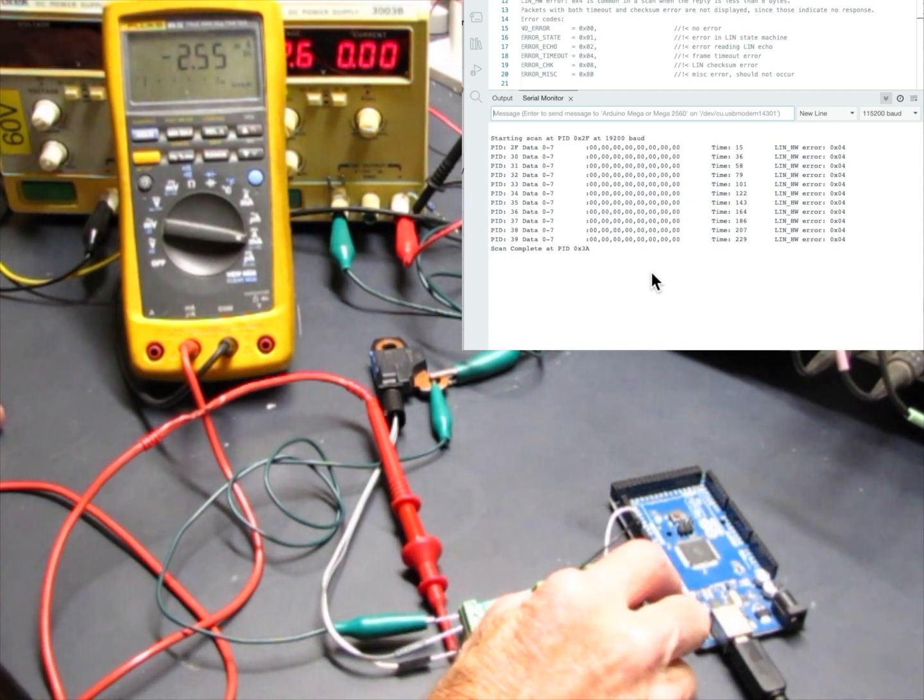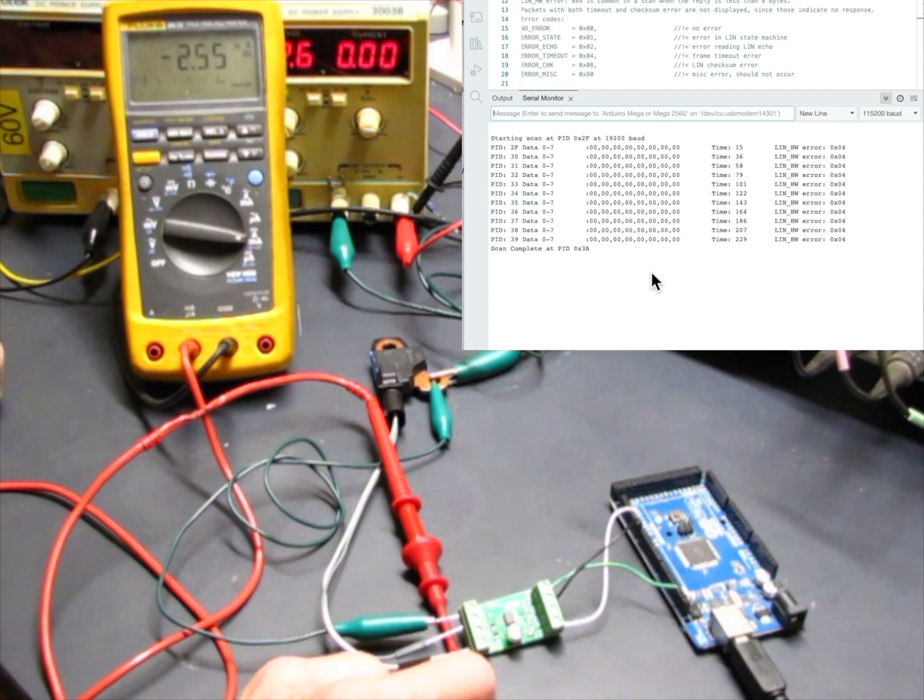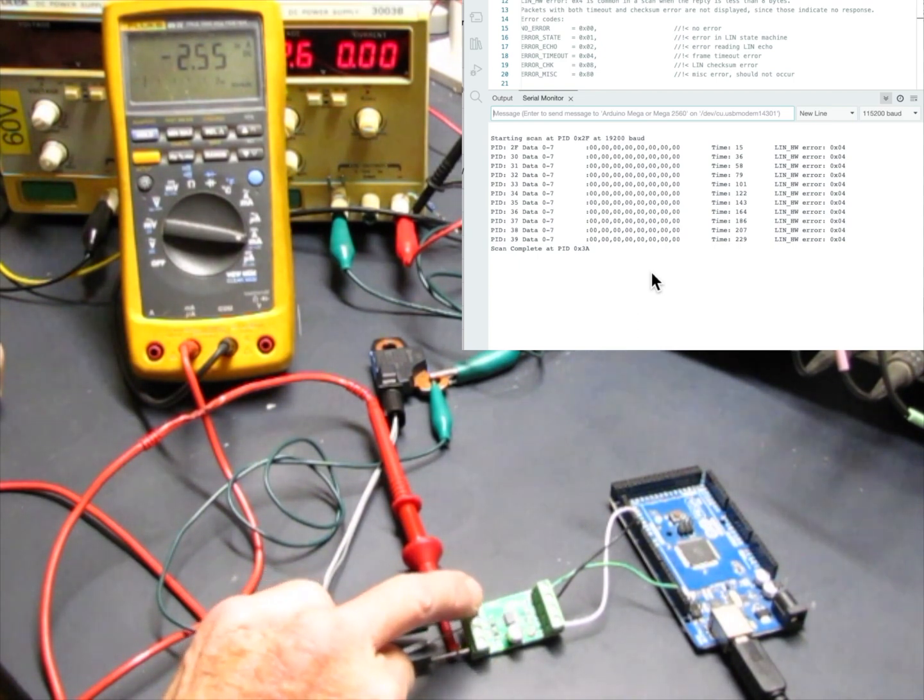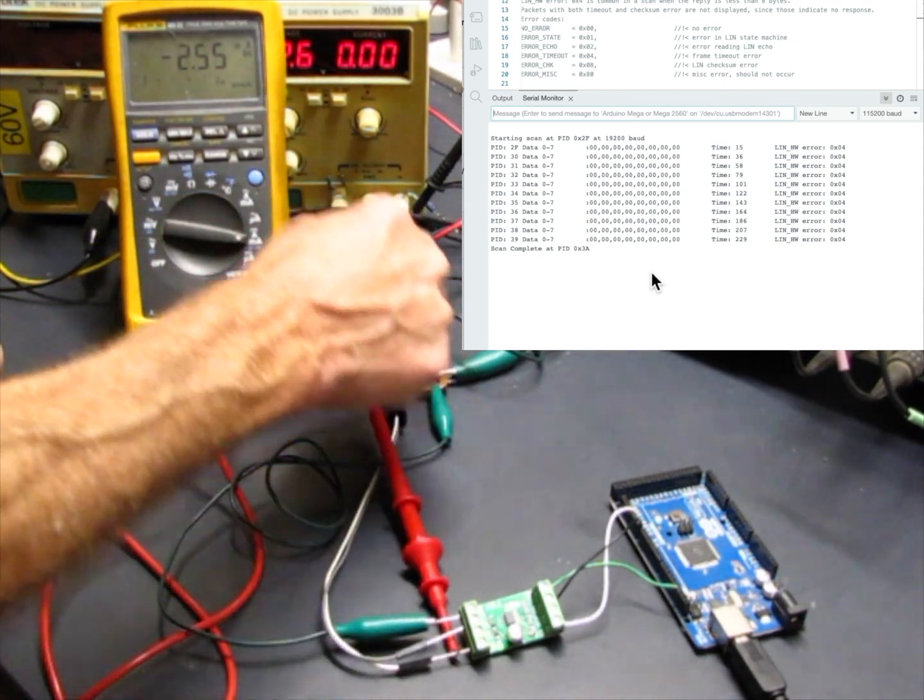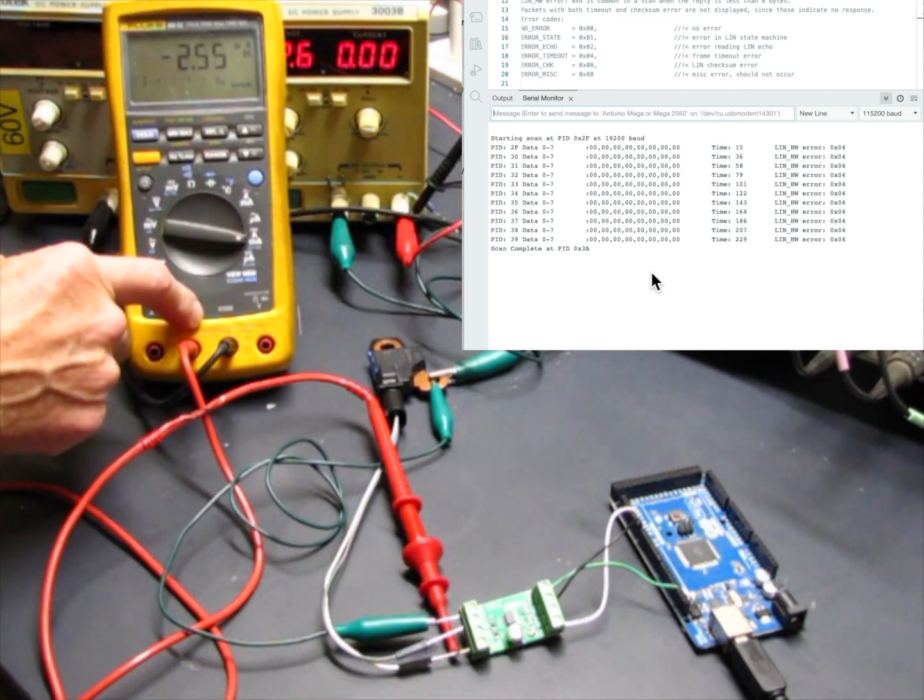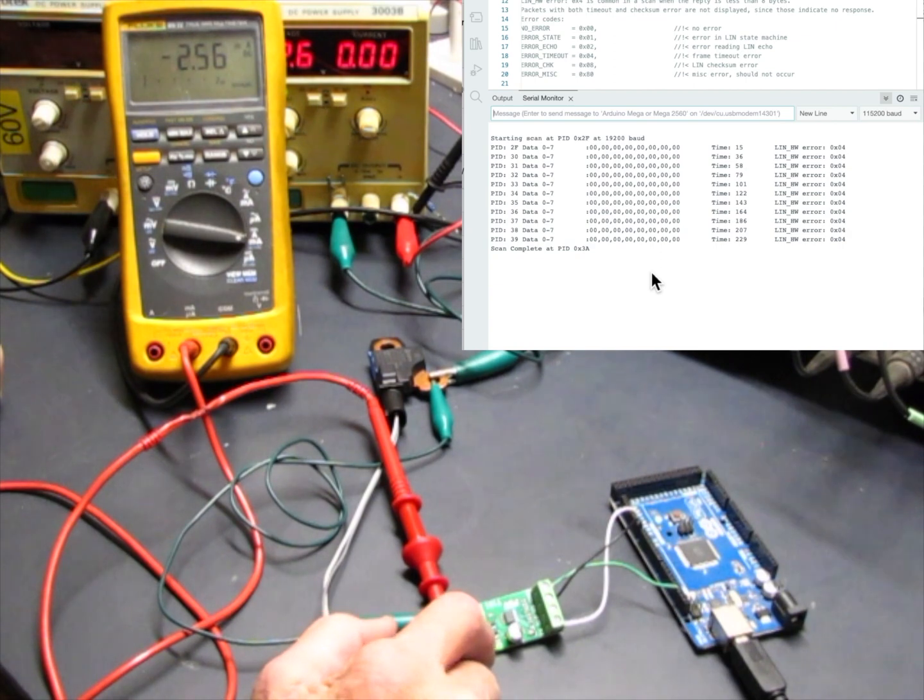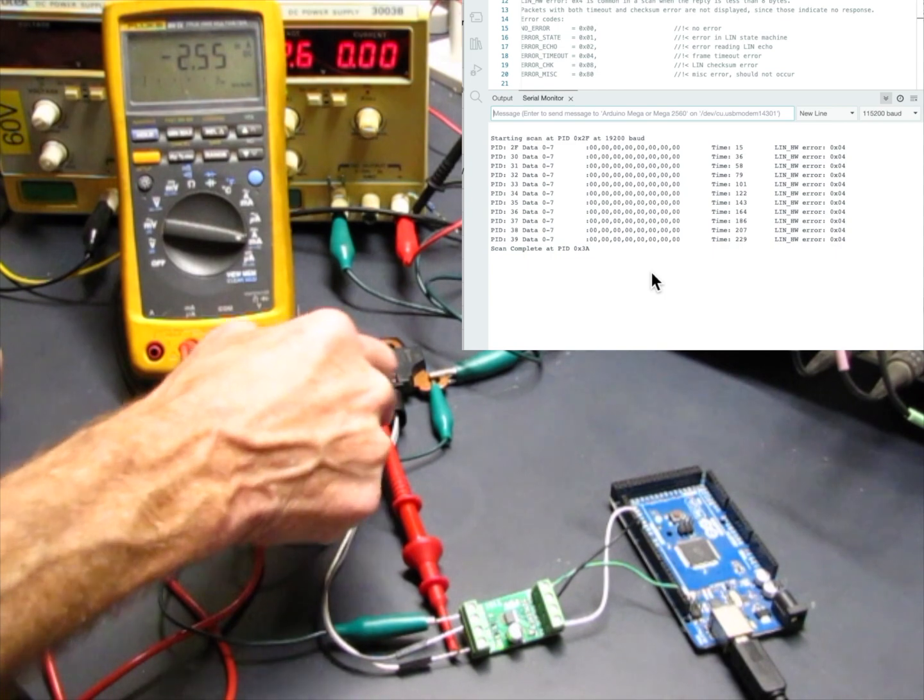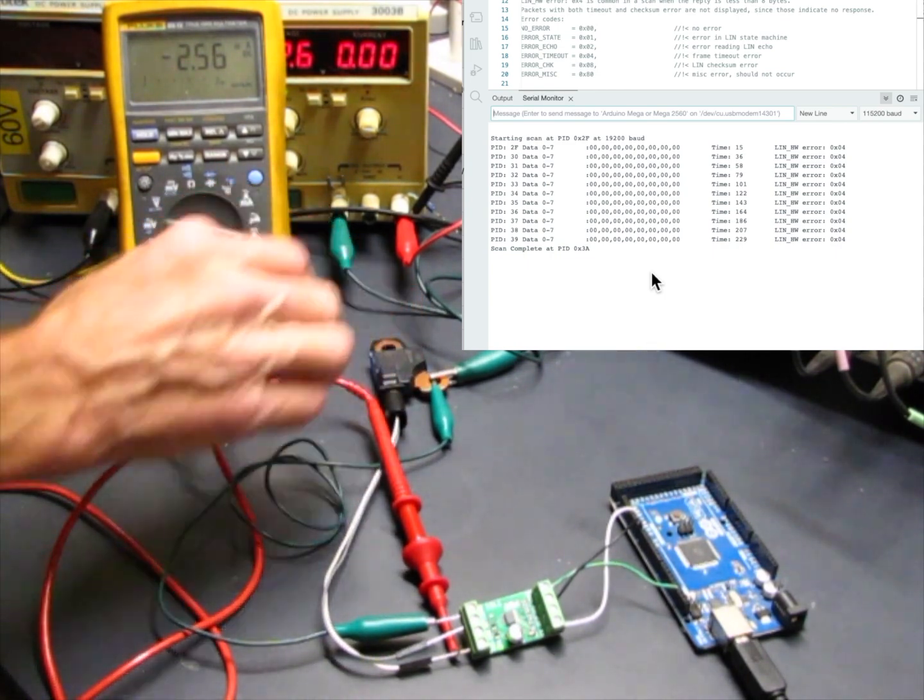The green wire is going from ground on the Arduino to ground on the T151 board. The ground on the T151 board is tied to the current sensor bus bar and also to the 12 volt circuit ground. The 12 volt power is running through this meter and coming in here to the plus 12 volt signal on the power pin on the T151, supplying 12 volts there.